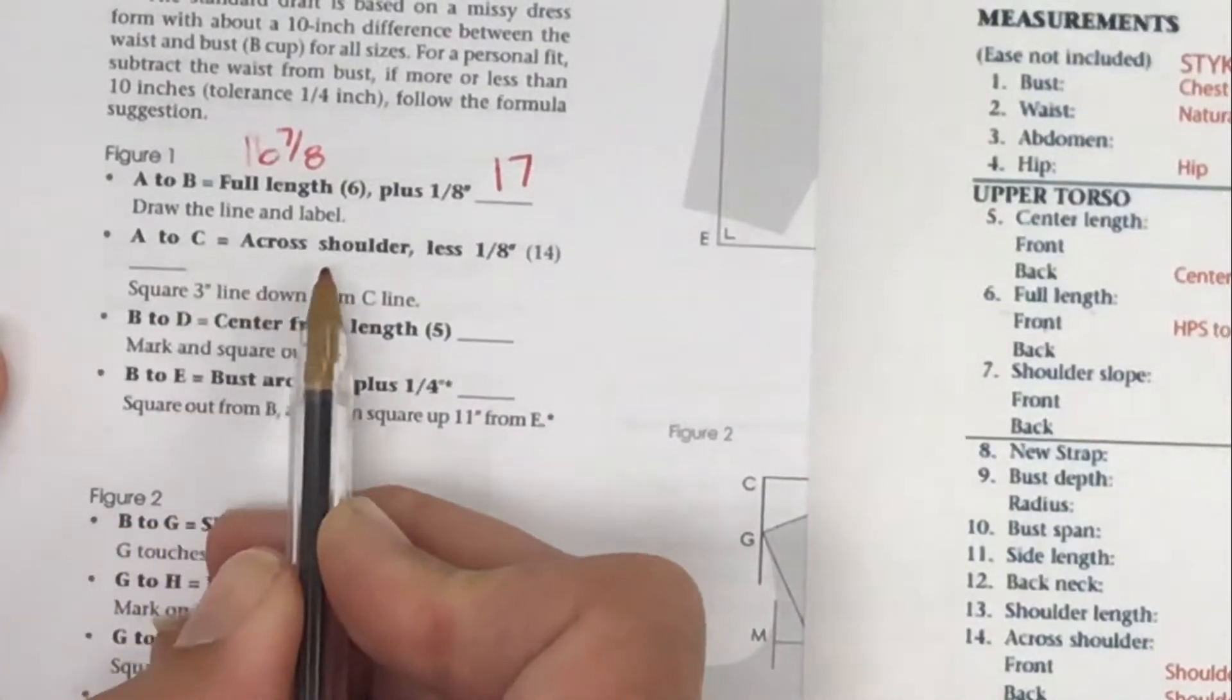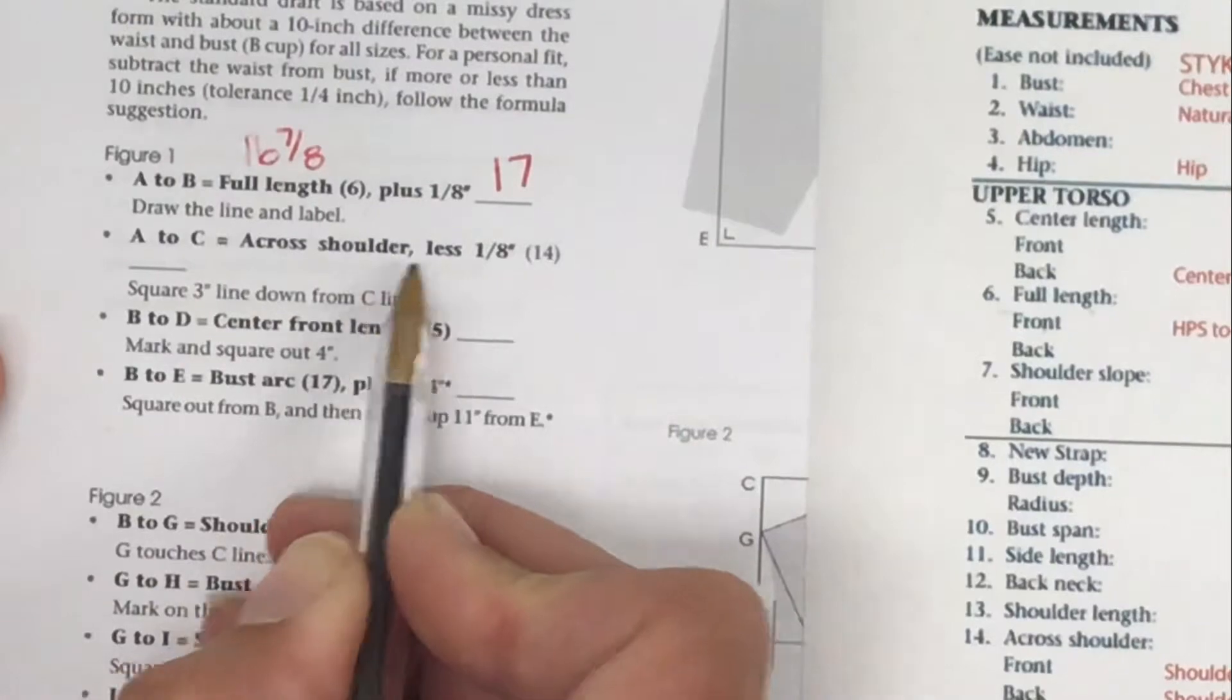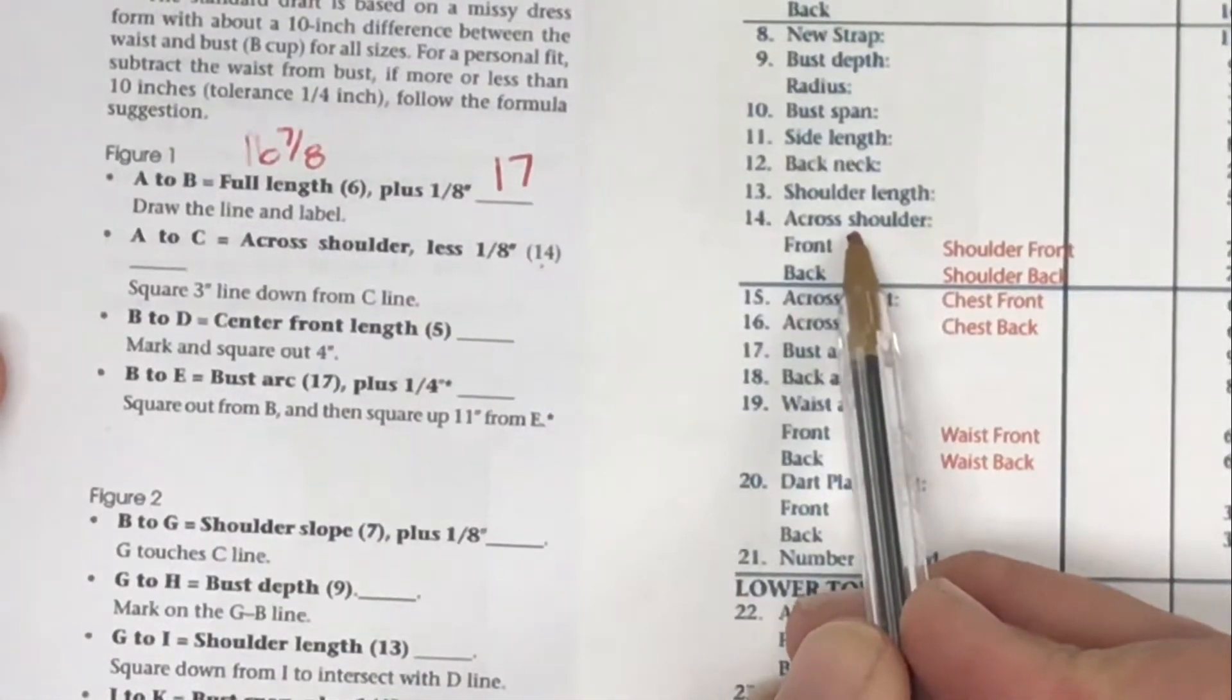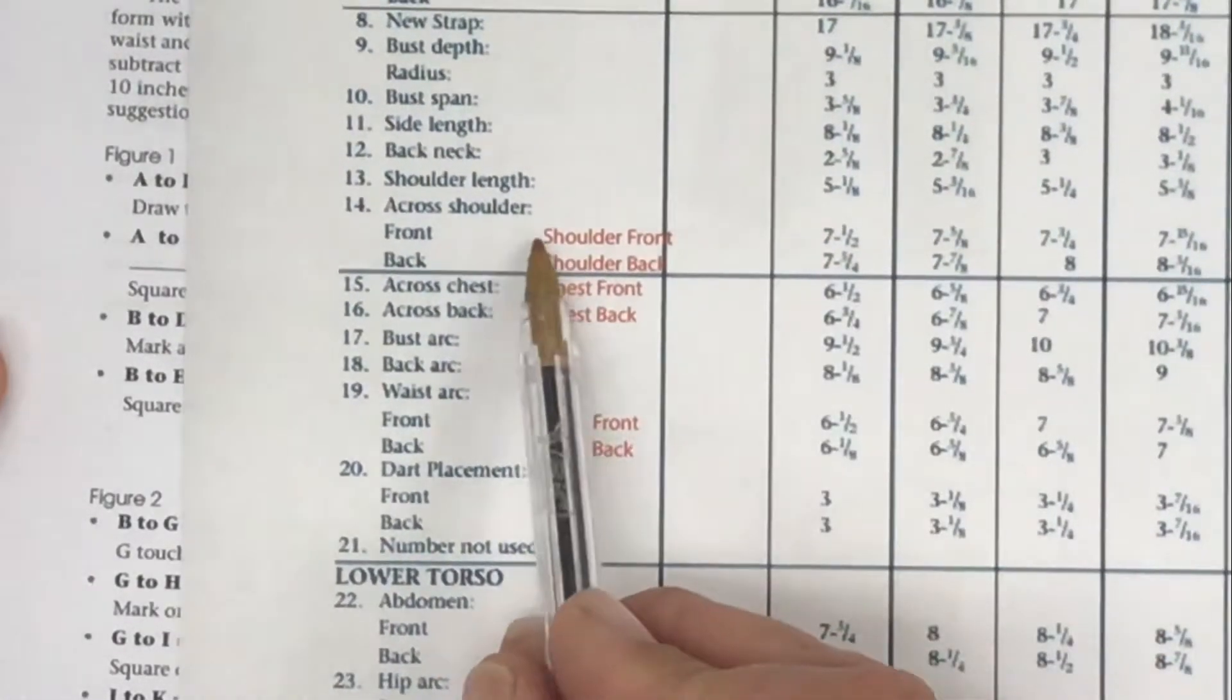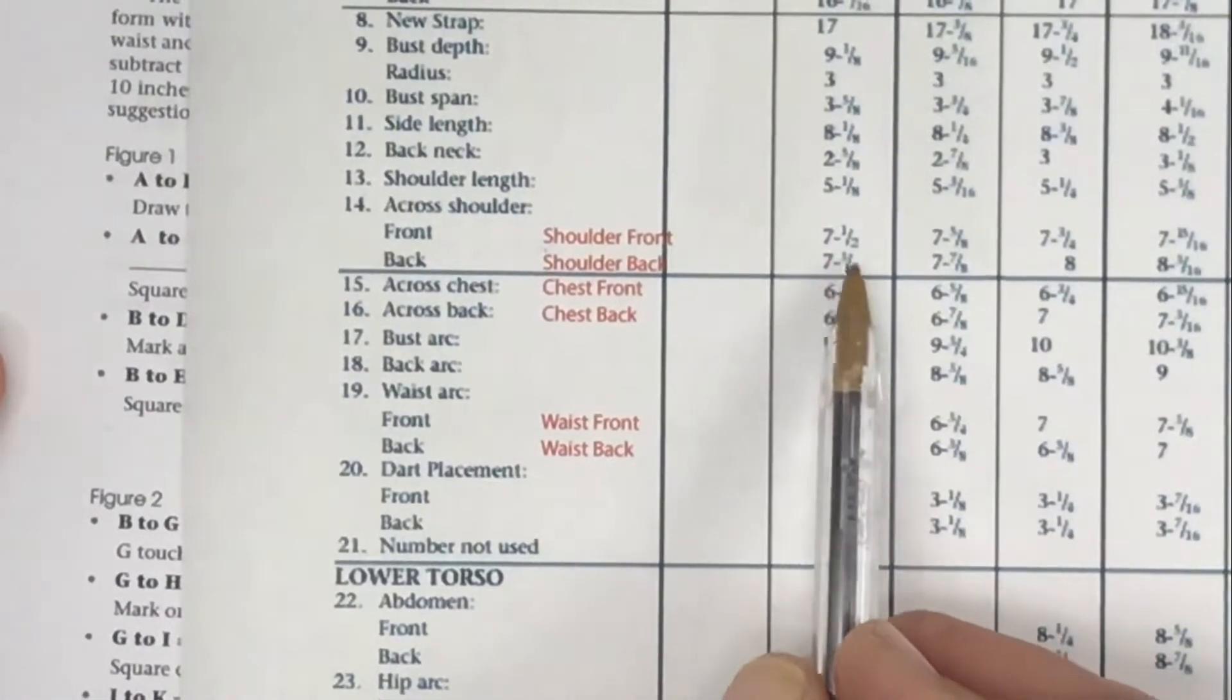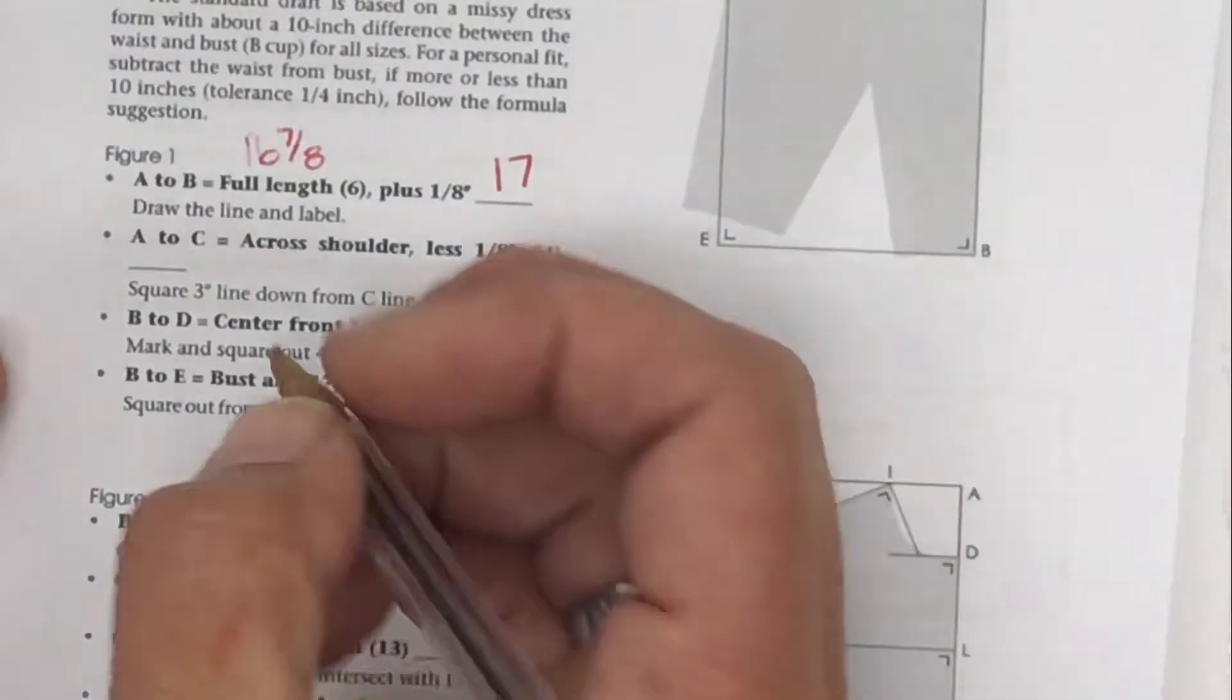The next one is cross shoulder, and we have to do some subtraction. Cross shoulder is number 14. I'm looking at my across shoulder. We again have a front and a back. I'm using the first one for size 6. My across shoulder is 7 and 1/2 inches. I'm just going to write 7 and 1/2.